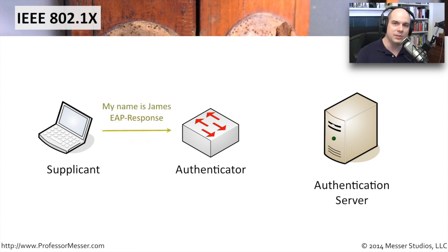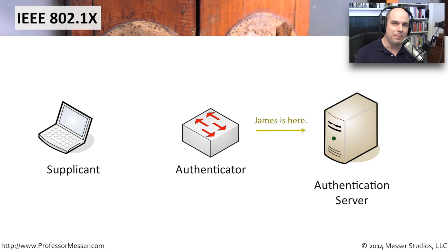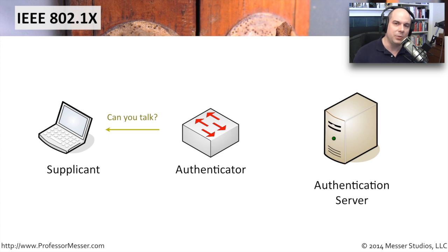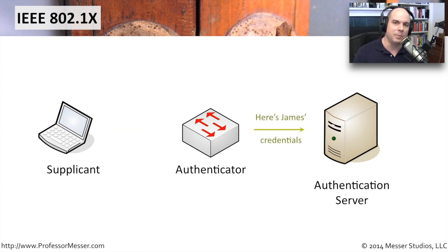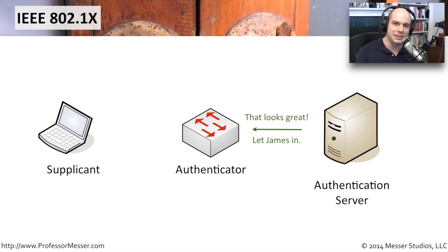The supplicant recognizes the request and responds, identifying itself — for example, 'My name's James, I'm here on the network and I'd like to gain access.' The authenticator lets the authentication server know: 'James is on the network, what would you like to do?' The authentication server requests more information, so the authenticator asks James for credentials. James provides credentials, the authenticator passes them to the authentication server, which reviews them and confirms: 'James is allowed access — go ahead, enable the ports and let him onto the network.'